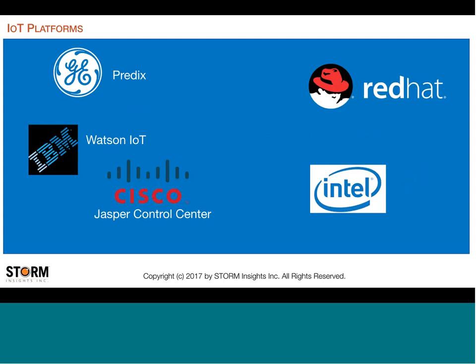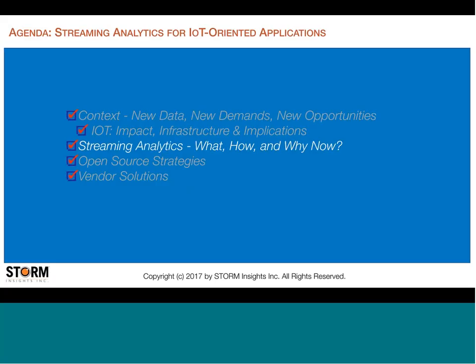Looking at where this is going, different companies are now providing platforms for this communication. Think of these as the infrastructure companies — the companies building the roads that we're going to travel on with all this information. We need to get from the platform level to building applications, because that's really where a lot of the interesting work happens. Now I want to look at what is going to be computed and communicated from these various devices.